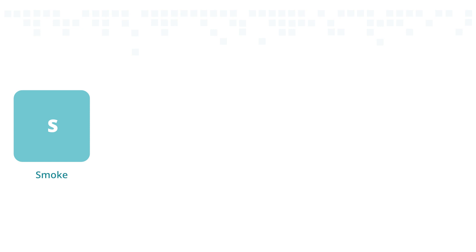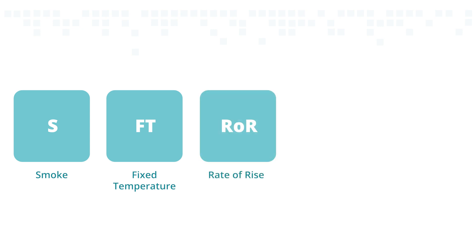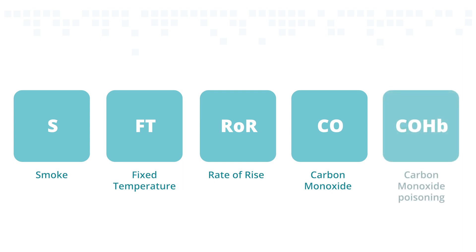The modes are represented by mode strings — characters and symbols showing which sensing elements are active and in which combinations. The letters represent the type of detection: S for smoke, meaning the smoke chamber is active; FT, meaning the heat elements are active and set to alarm at a set temperature; ROR represents the same heat elements but set to activate after a rise in temperature over a set time; CO represents the CO sensing element; and COHB — the chemical symbol for carboxyhemoglobin — is used for modes that track CO density, giving a warning about the threat of CO toxicity and carbon monoxide poisoning.